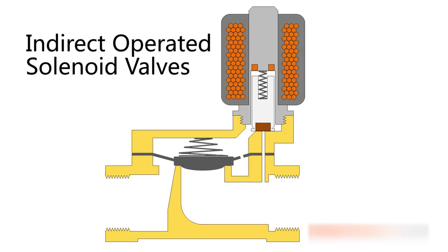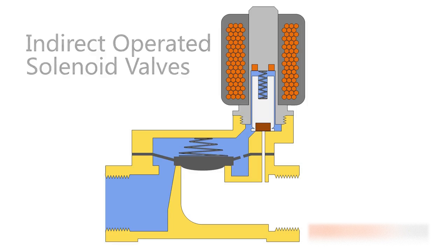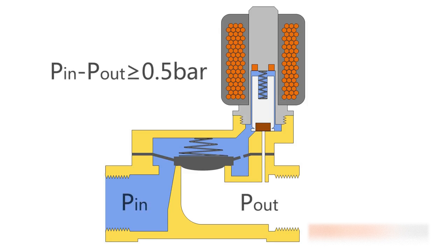Indirect operated solenoid valves use the pressure of the medium to open and close. Therefore they require a small differential pressure of typically 0.5 bars.